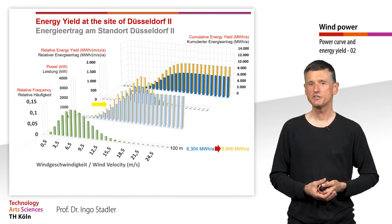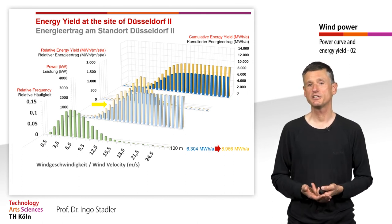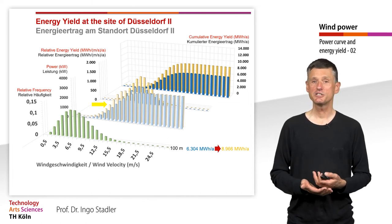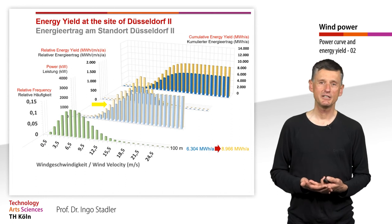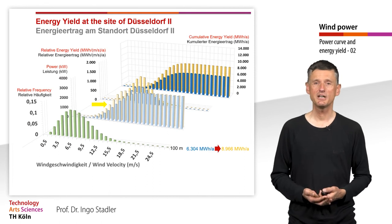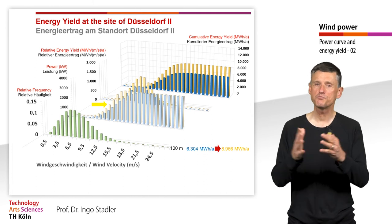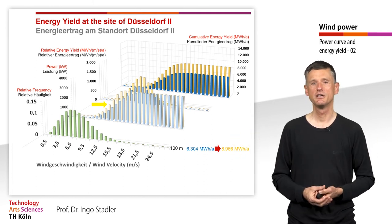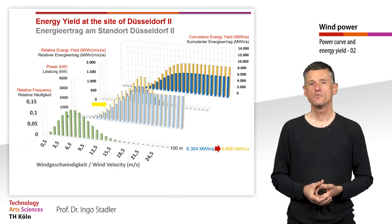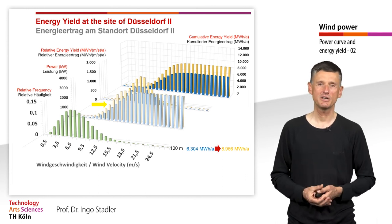Comparing both turbines at 100 meters hub height, we see a significant difference in the yearly energy yield. The turbine designed for the coastline versus the inland turbine with the larger rotor area shows an increase from more than 6,000 to more than 8,000 MWh per year.